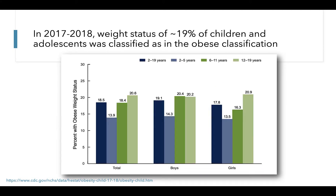This figure presents the most recent weight status data for children aged 2 to 19 years. The x-axis groups are both sexes combined or broken out by boys and girls, and the y-axis is the percent of children classified as obese. The dark blue bars represent 2 to 19 year olds combined, light blue bars represent 2 to 5 year olds, dark green bars represent 6 to 11 year olds, and light green bars represent 12 to 19 year olds. Across all age groups and both sexes, the prevalence of obesity is 18.5%, significantly lower for 2 to 5 year olds and increasing for older age groups.